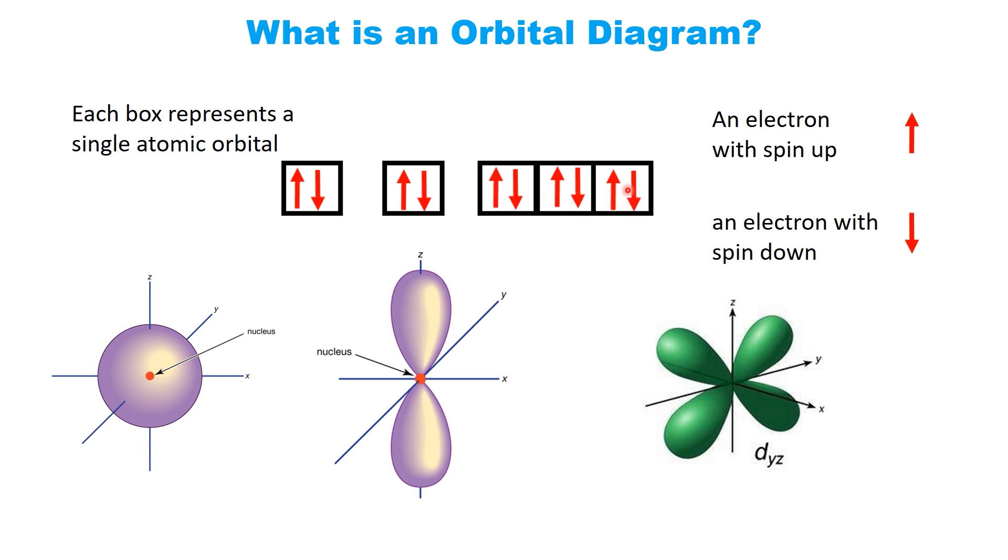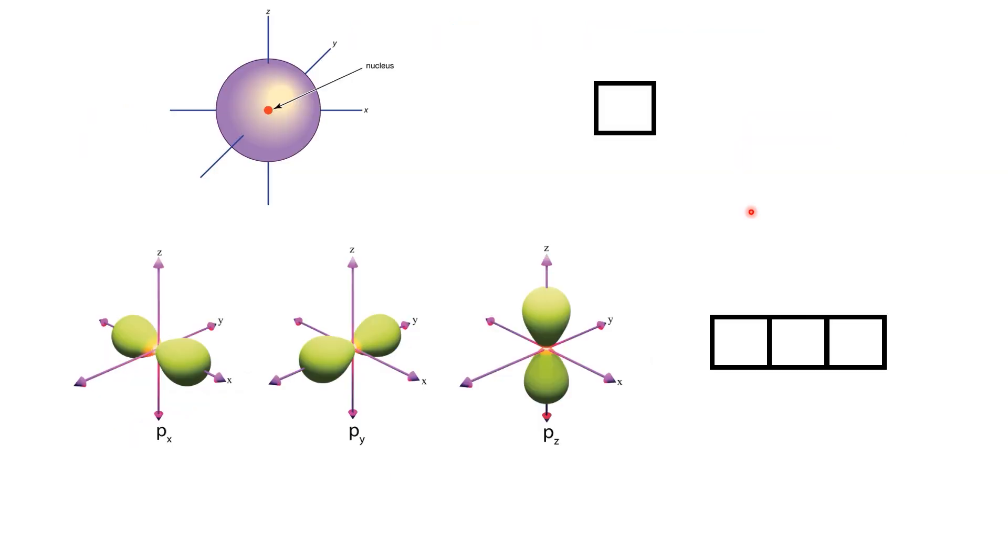These boxes help simplify the complex shapes of orbitals, allowing us to focus on electron arrangement and spin without needing to picture the actual three-dimensional shapes. Now, let's talk about why different orbitals are represented by different numbers of boxes.